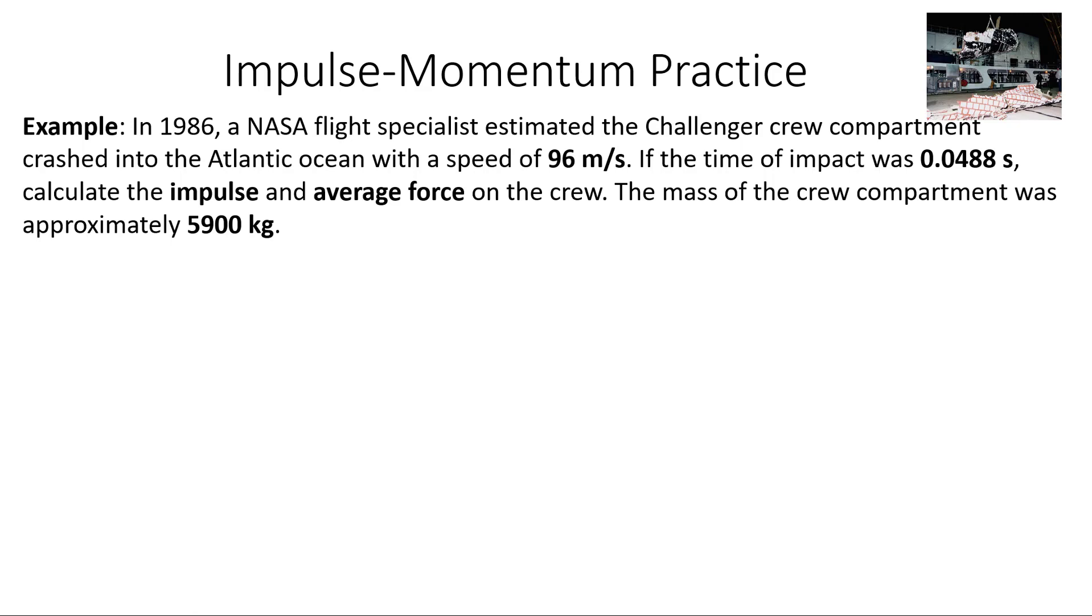In 1986, a NASA flight specialist estimated that the Challenger crew compartment crashed into the Atlantic Ocean with a speed of 96 meters per second. That's about 200 miles an hour. The time of impact was 0.0488 seconds. Calculate the impulse and average force on the crew. The mass of the crew compartment was approximately 5,900 kilograms.